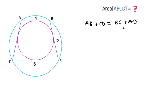Here according to the question, AB is 4, BC is 5, and CD is 6. Let's suppose AD is X.